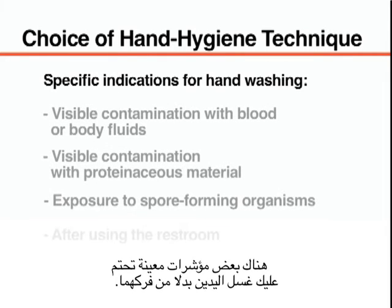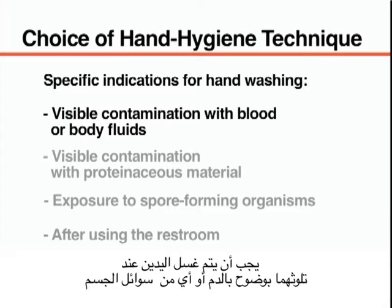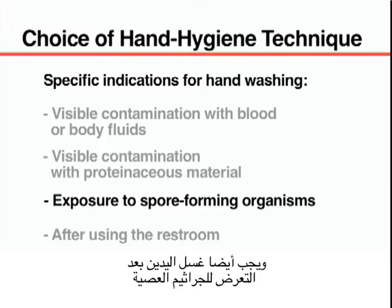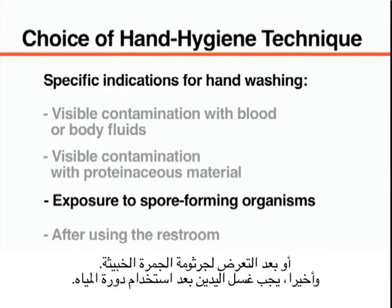There are a few specific indications for which hand washing should be performed instead of hand rubbing. Hand washing must be conducted when the hands are visibly contaminated with blood or body fluids, or with proteinaceous material. Hand washing must also be performed after exposure to spore-forming organisms — for example, after caring for patients with diarrhea associated with Clostridium difficile, or after exposure to Bacillus anthracis. Finally, hand washing should be performed after using the restroom.